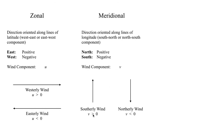By convention, a southerly wind, which blows from the south to the north, is defined as a positive value of v because the wind is going towards the north — towards more positive values of the meridional axis. By contrast, a northerly wind, which blows from north to south, has a negative meridional component because it's going towards the south, towards more negative values of the meridional axis.